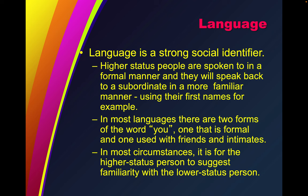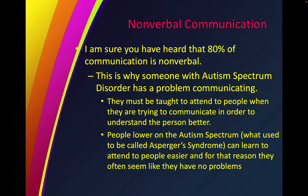You have probably heard that 80% of communication is nonverbal. This is why someone with autism spectrum disorder has a problem communicating — they must be taught to attend to people when communicating in order to understand the person better. People lower on the autism spectrum, what used to be called Asperger's syndrome, can learn to attend to people more easily, and for that reason they are often seen as though they have no problems.